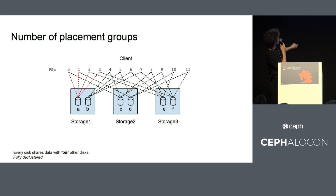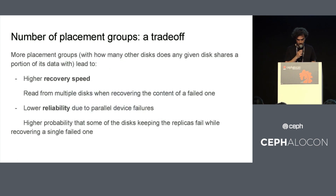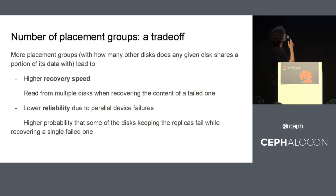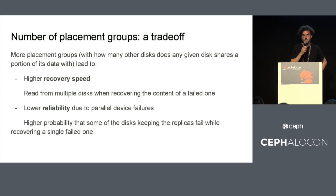When I need to recover disk A, I can read in parallel from different disks. But again, this particular example presents a trade-off introduced by the number of placement groups. On the one hand, you have the highest recovery speed. On the other hand, you have a high probability that some other disk fails while you are recovering a given one.